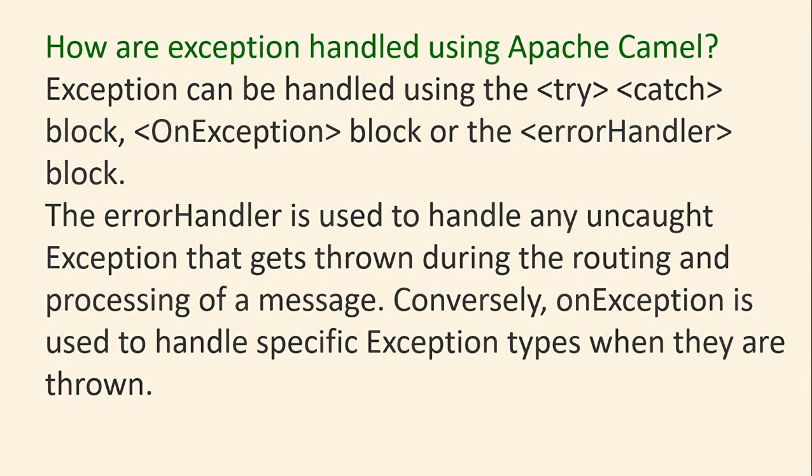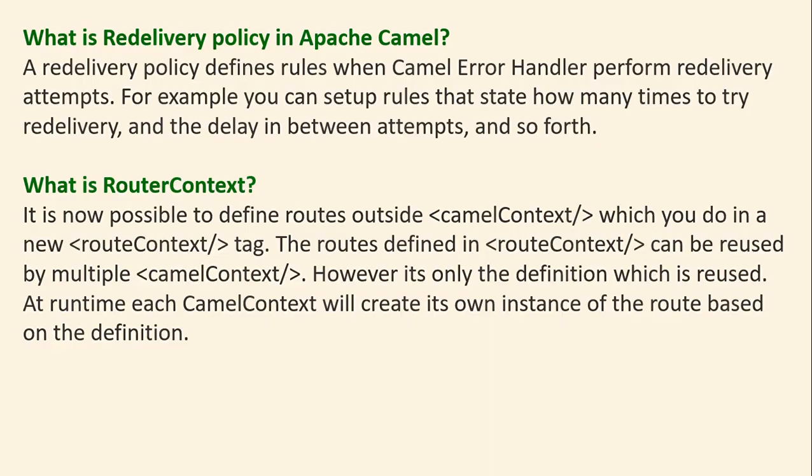How are exceptions handled in Apache Camel? Exceptions are handled using the try-catch block, onException block, or the error handler block. The error handler is used to handle any uncaught exception thrown during routing and processing of messages. An onException is used to handle specific exception types when they are thrown.